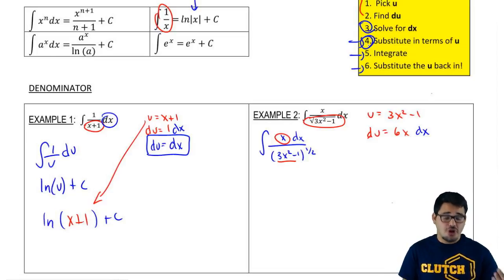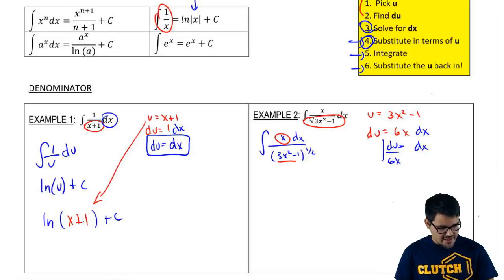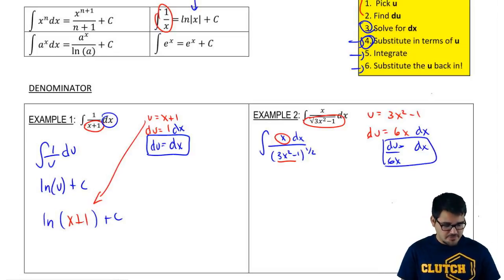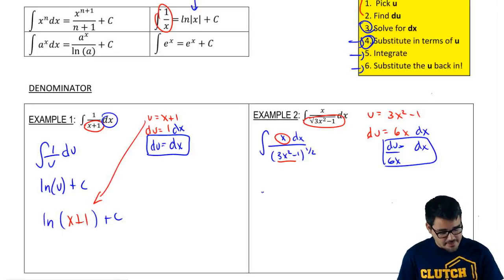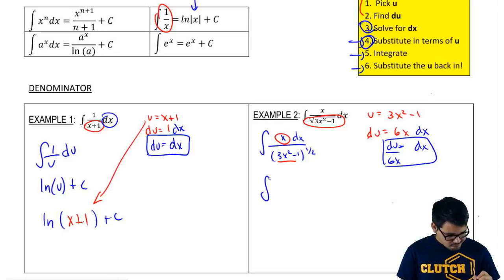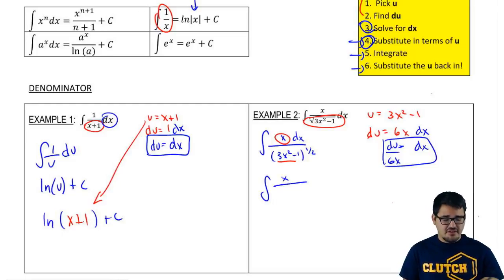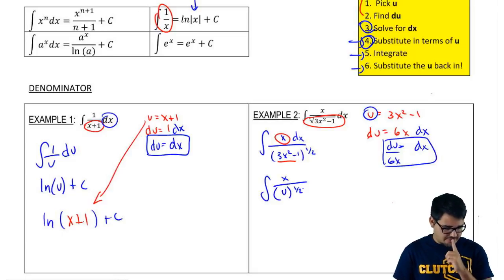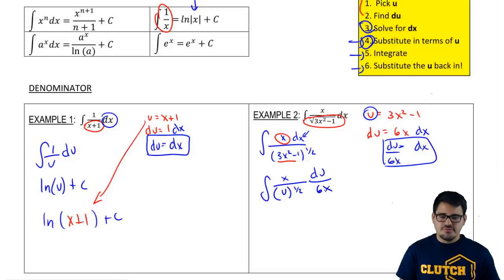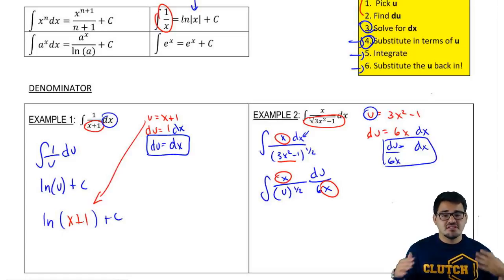If you pick the wrong u, the big consequence is that you can't make everything in terms of u, and you're never going to get to step 4. If you can't get to step 4, you can't finish your problem. So the whole idea is to make sure to pick the right u. Now let's finish step 3: solving for dx. Our dx is going to be equal to du over 6x. Now that we have that, we're ready to substitute in terms of u.